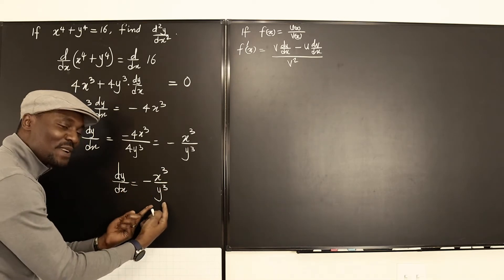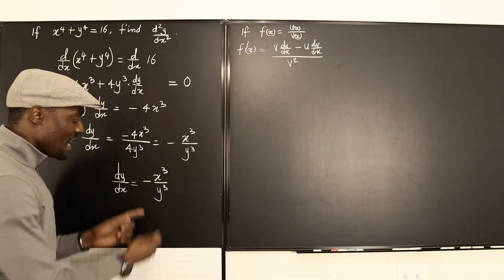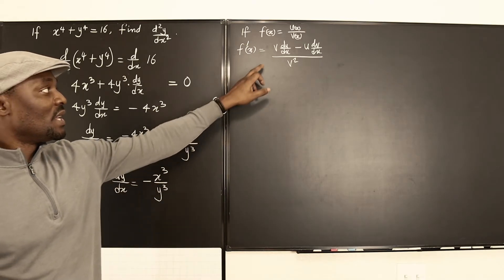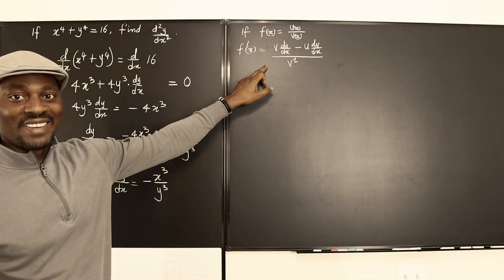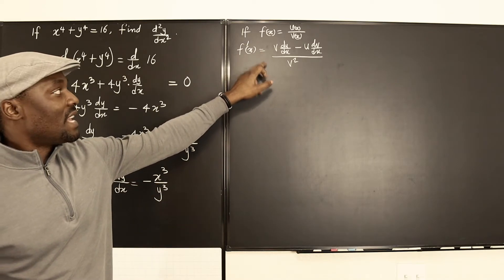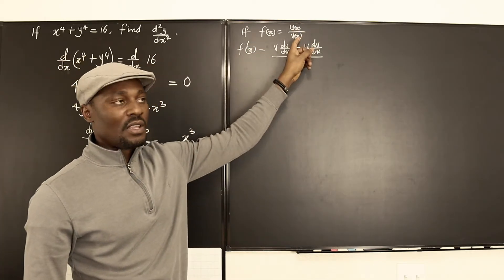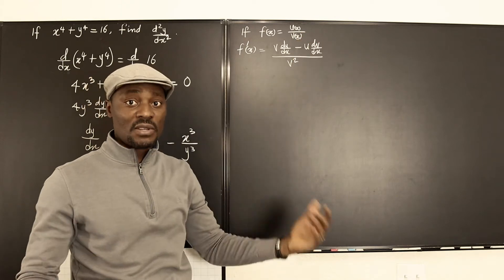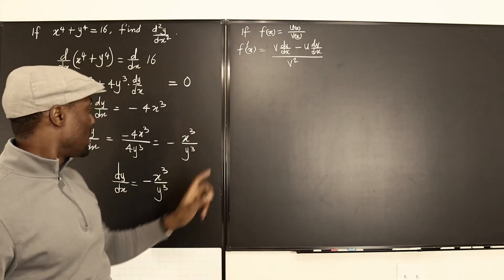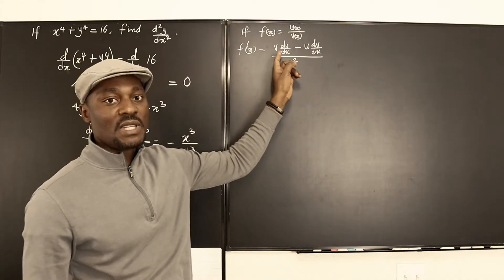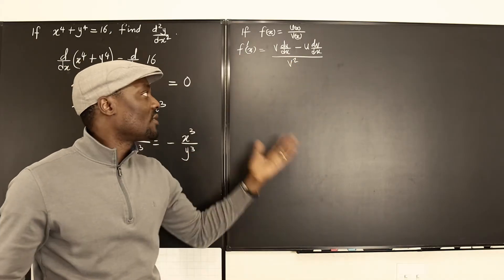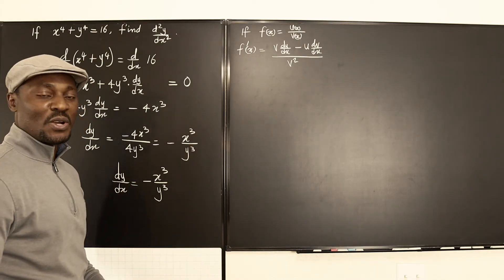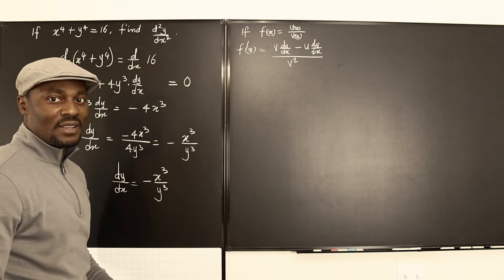We just need to differentiate this one more time. Because this is a quotient, we apply the quotient rule. Remember: if a function is a quotient where the numerator and denominator are both functions of x, then the derivative is v(du/dx) minus u(dv/dx), all over v squared. We apply this to our expression using implicit differentiation to keep things clean.